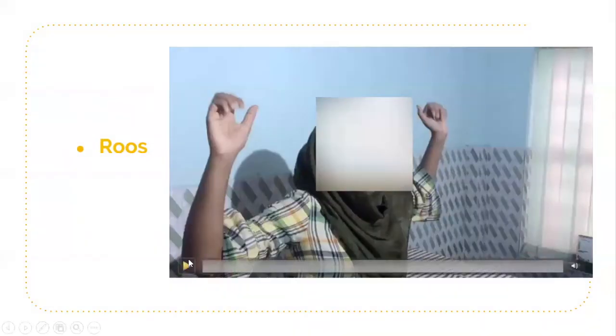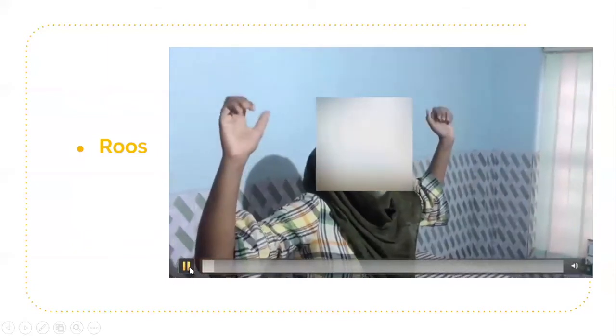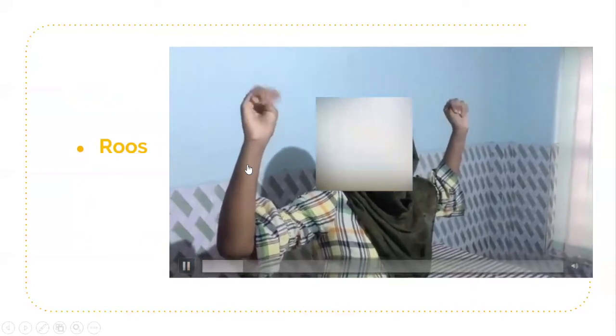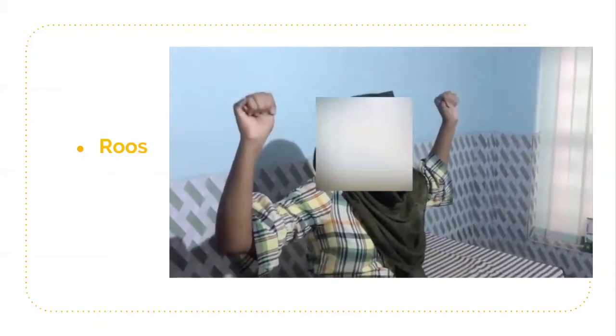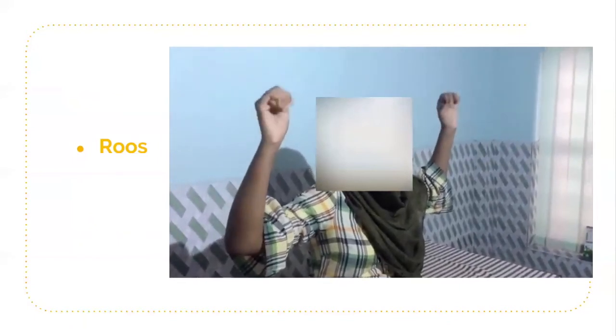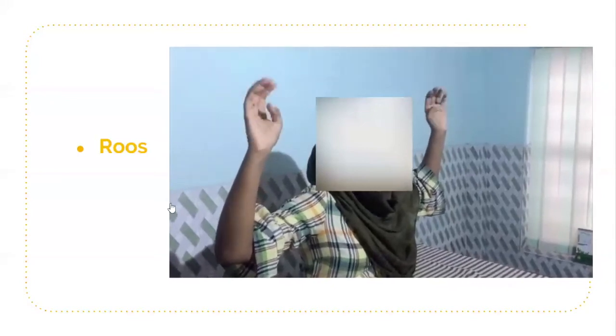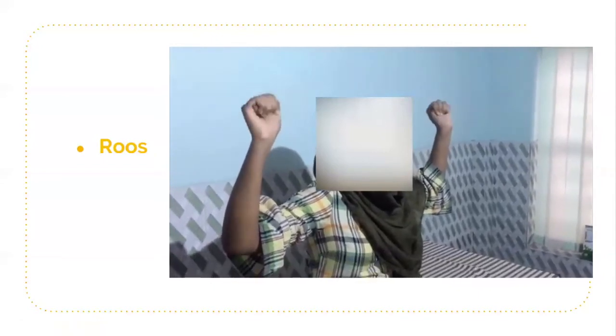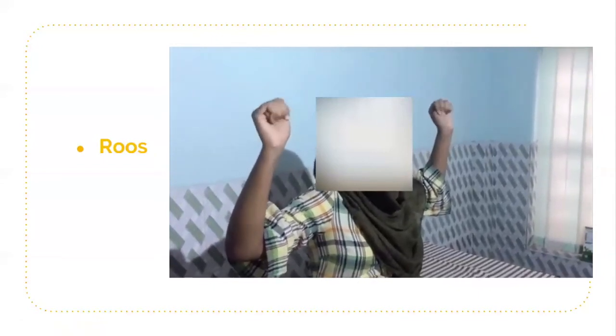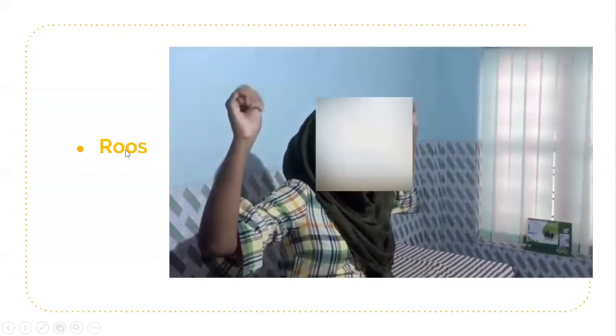In this video you can see the Roos test: the shoulder is abducted to 90 degrees, external rotation is performed, and the elbow is flexed to 90 degrees — this is the surrender position. The patient is asked to clench the fist continuously for three minutes. Whenever there is neurovascular occlusion, the patient is unable to continue for three minutes. This is a more confirmatory test for thoracic outlet syndrome.